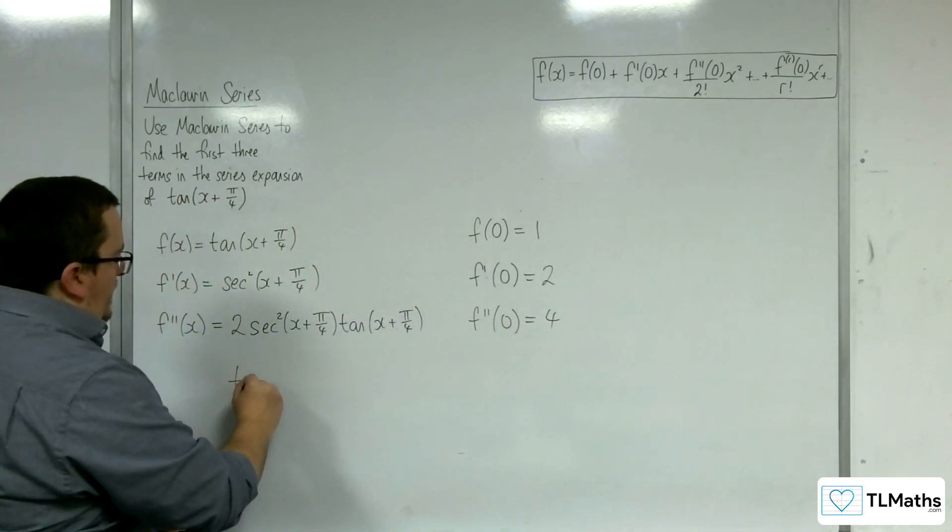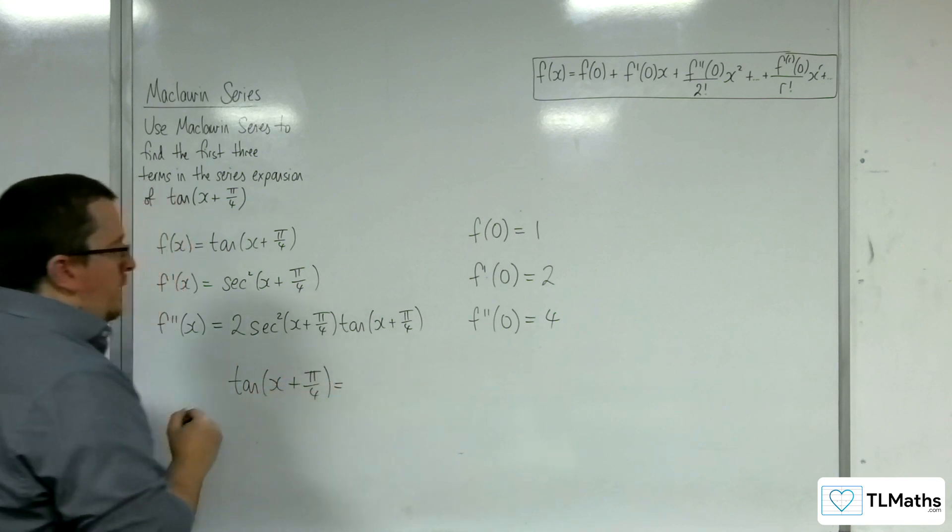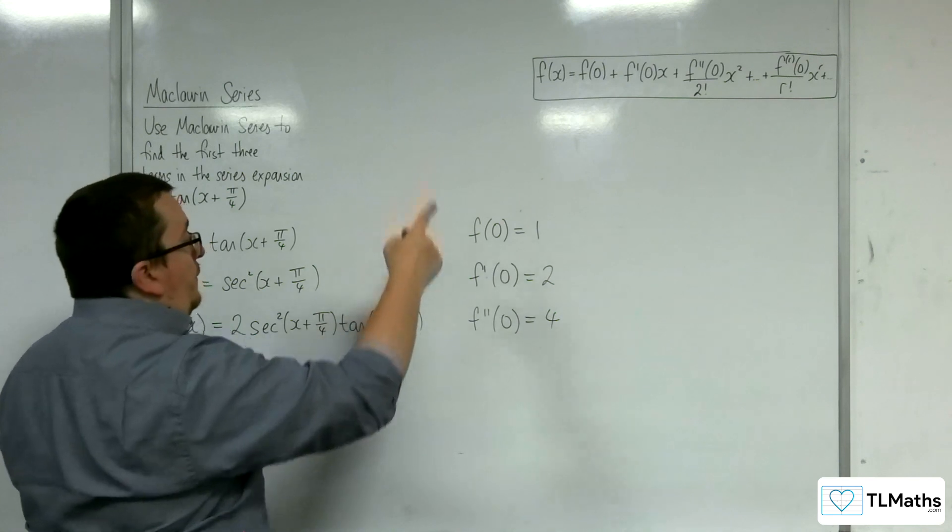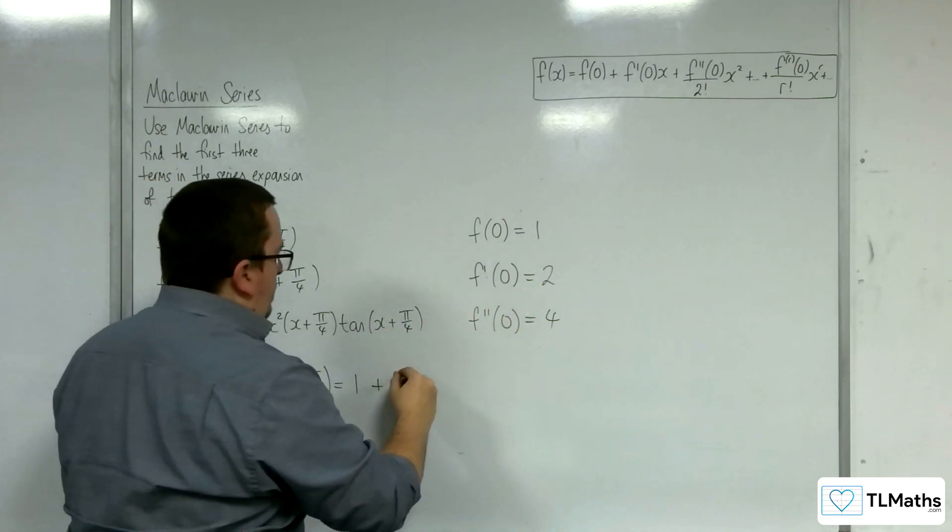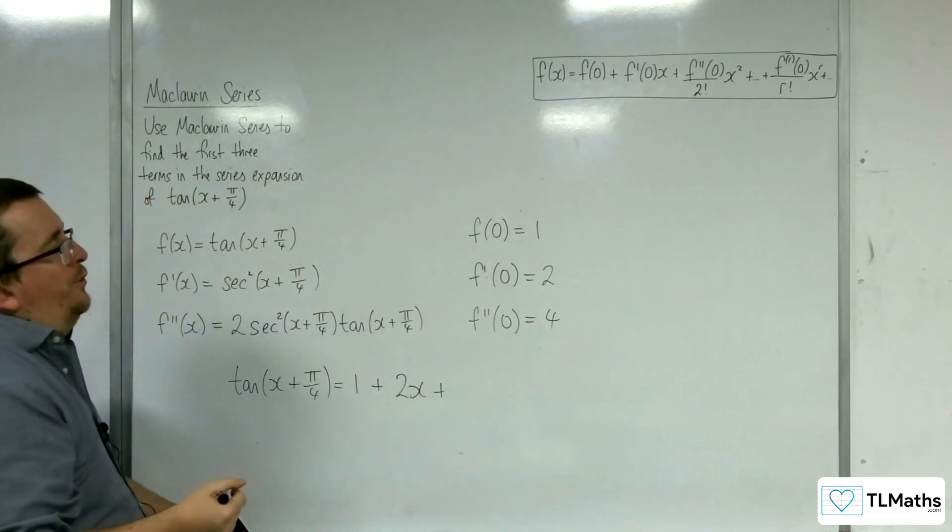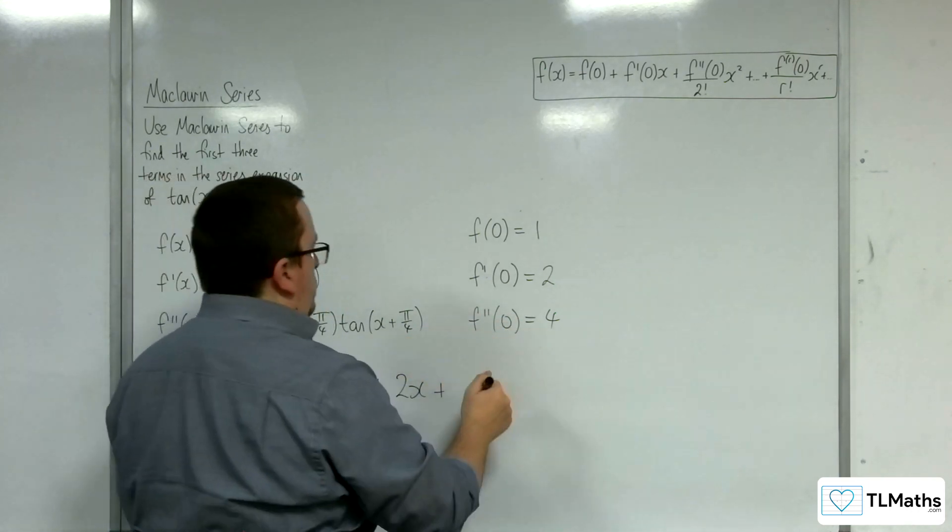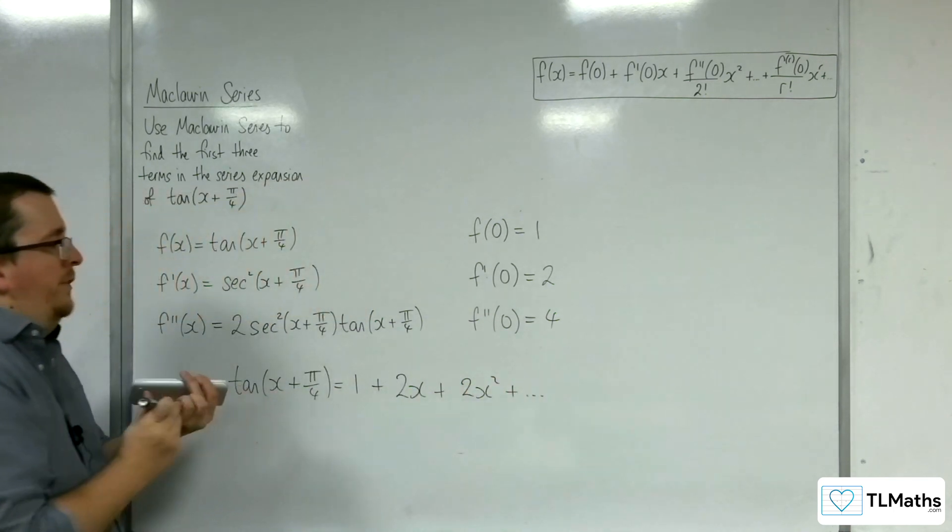So that means that tan of x plus pi over 4 is f of 0, so 1, plus f prime of 0 times x, so 2x, plus f double prime of 0 over 2 factorial, so that's 4 over 2, so 2x squared, plus the other terms.